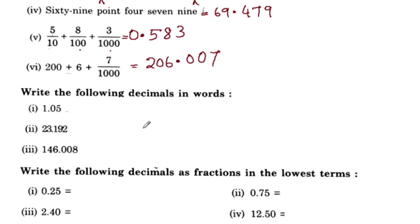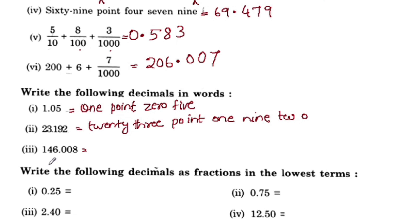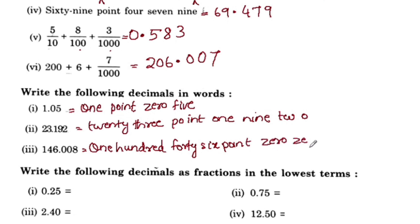We have to write the following decimals in words. 1.05. 23.192. 146.008.